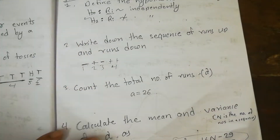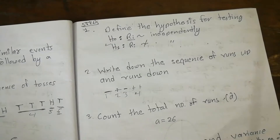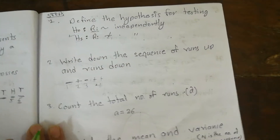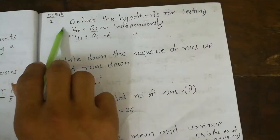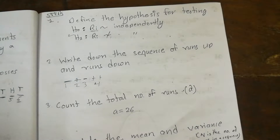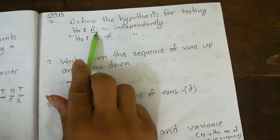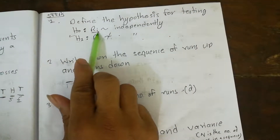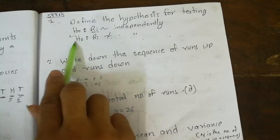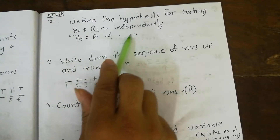We need to follow some steps to find the run test. Step 1 is to define the hypothesis for testing: H₀ is that the values are random, proportional to independence; H₁ is that the values are not proportional to independence.